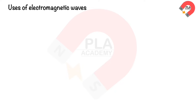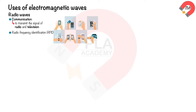Uses of electromagnetic waves. Radio waves are used to transmit signals for radio and television, and are also used in cellular networks, GPS, and Wi-Fi. Radio frequency identification (RFID) uses radio waves to identify people or objects in applications such as inventory tracking, access control, and payment systems. Bluetooth is used to communicate between two Bluetooth-compatible devices. Radio telescopes are used in astronomy to observe naturally occurring radio waves from stars, planets, galaxies, and other astronomical objects.